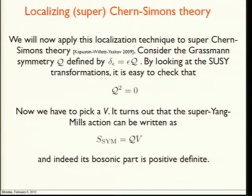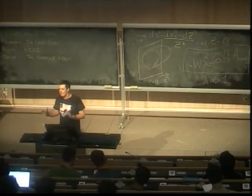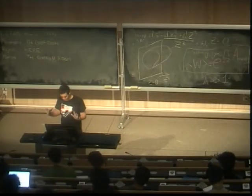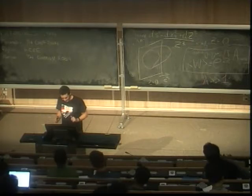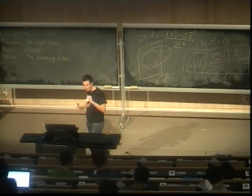So this is my last lecture, and I have to say I'm quite shocked because I have been slower than when I gave these lectures on a blackboard. So my plan now is to do half an hour of localization of ABJ(M) theory, and then half an hour of how to eventually recover the strong coupling result from the gauge theory. I might have to drop some slides, so don't panic. I'm going to try to be coherent even if I have to be fast.